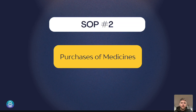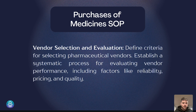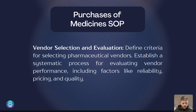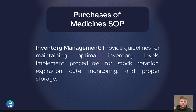Moving on to SOP number two: purchases of medicines. You want to ensure vendor selection and evaluation is included in your SOP, defining criteria for pharmaceutical vendors and having a systematic process for purchasing and ordering medicines for patients. Ordering and receiving is also very important — detailing the steps of placing an order for a patient or for having things on hand in office. Finally, inventory management ensures you're not running low on any stock inside your clinic.